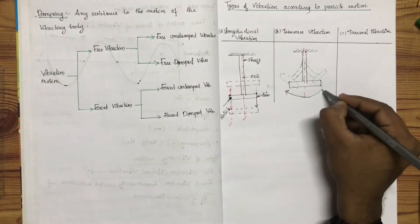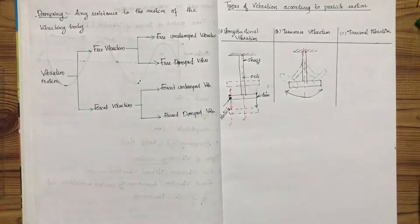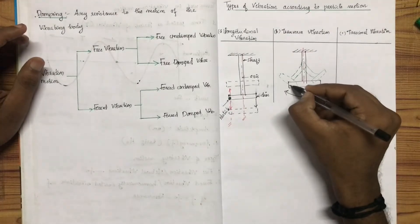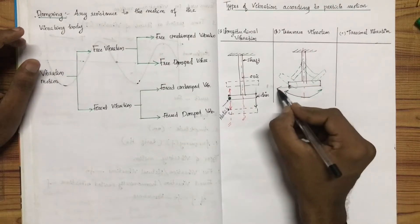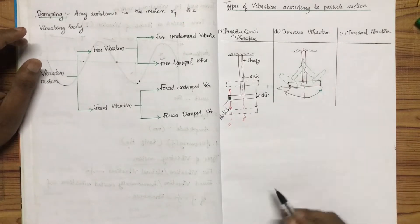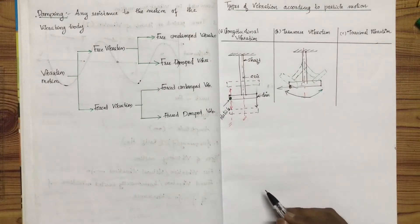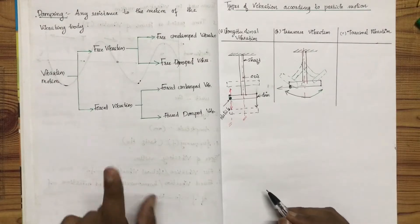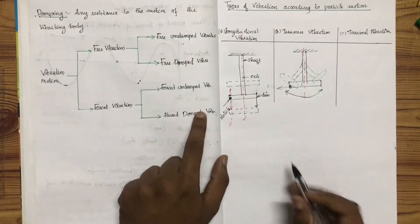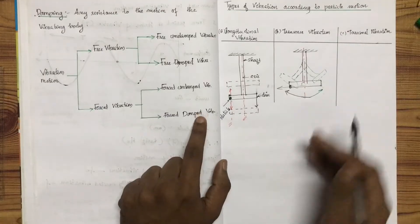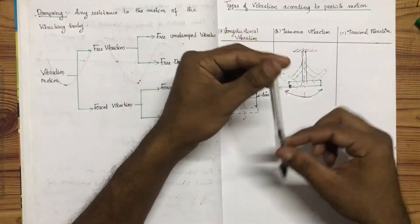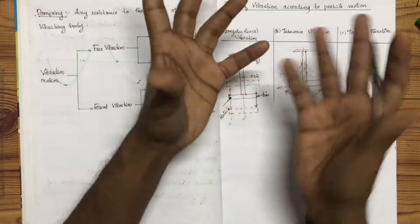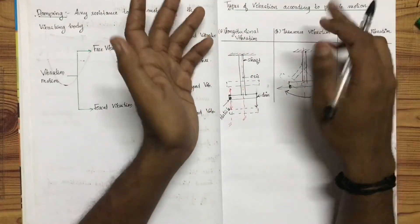When the particles of the shaft or disc move approximately perpendicular to the axis of the shaft, that is known as transverse vibration.